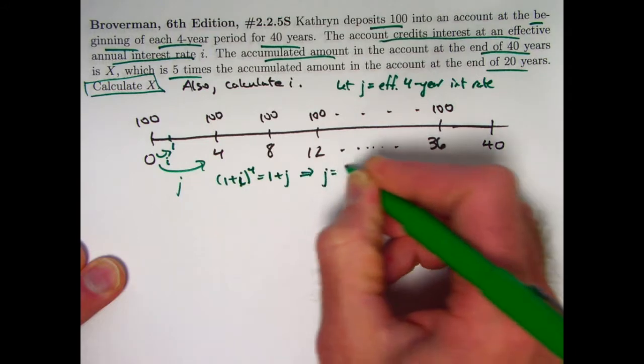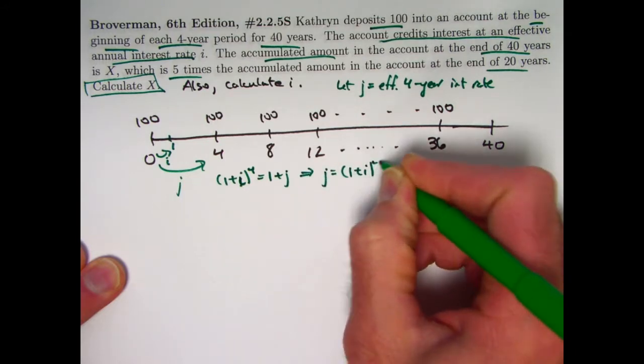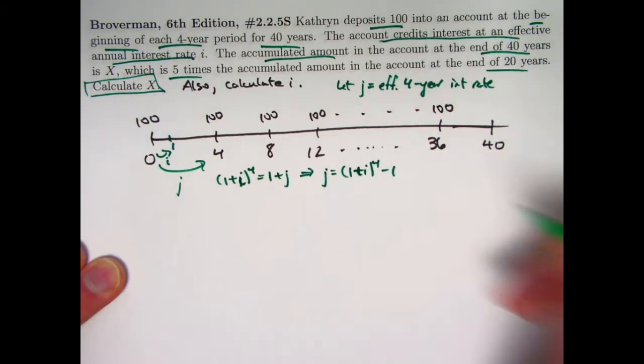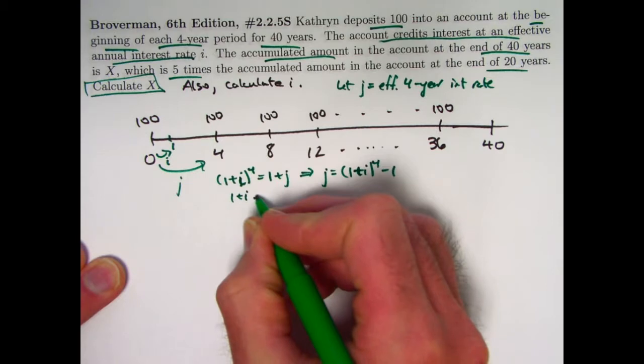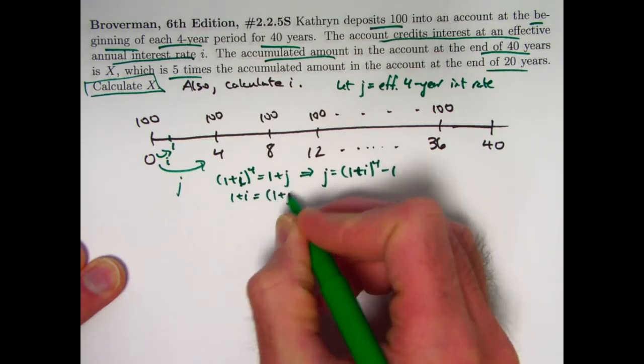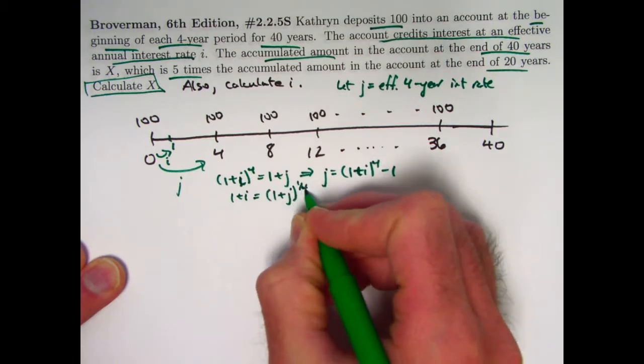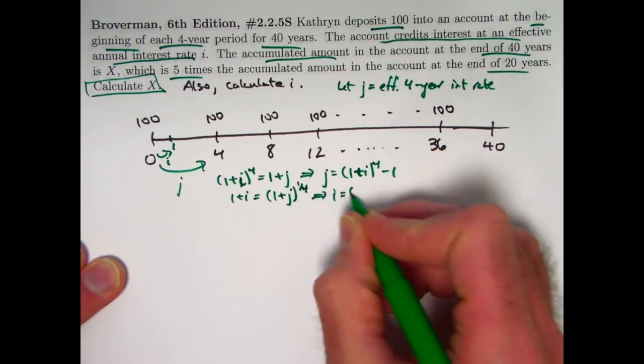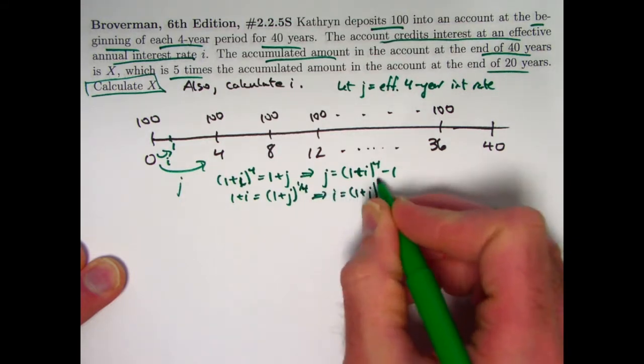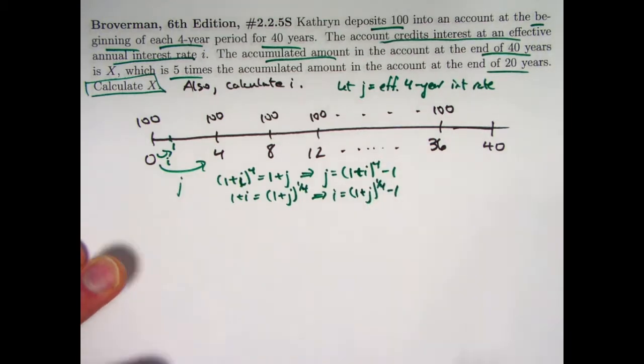You also could solve for i. You could take the fourth root of both sides. (1+i) will be the fourth root of (1+j). (1+j) to the one-fourth power. So i will be (1+j) to the one-fourth power minus one. Those are the relationships between i and j.